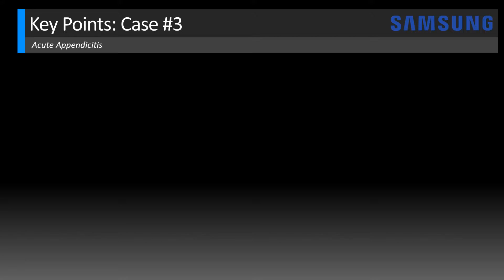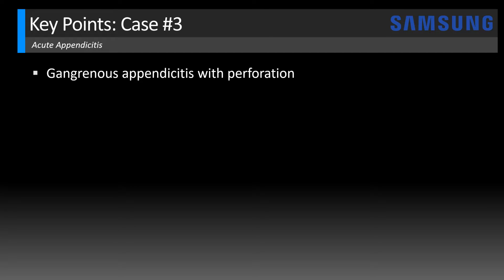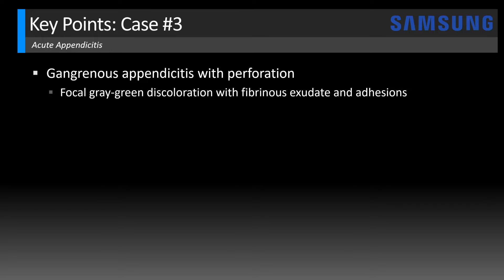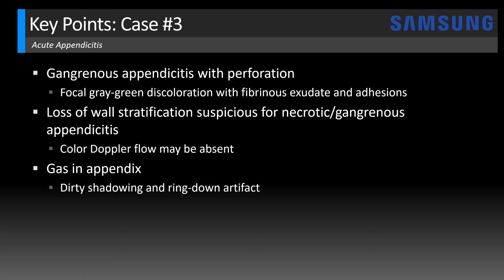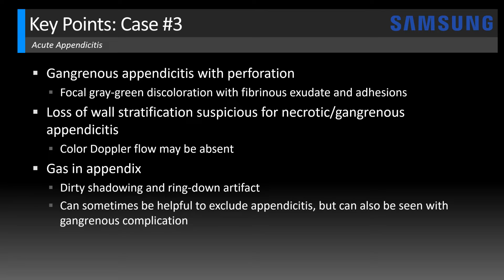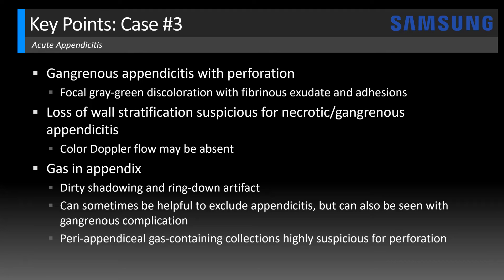Both the appendix and the collection appear thick-walled. At surgery, this was gangrenous appendicitis — not just perforation — with areas of focal gray-green discoloration and surrounding fibrinous exudate and adhesions. Loss of wall stratification raises suspicion for necrotic or gangrenous appendicitis on ultrasound. In gangrenous appendicitis, color Doppler flow may actually be lost. Gas in the appendix appears as dirty shadowing, sometimes with ring-down artifact; it can sometimes help exclude appendicitis since obstruction typically expels gas and causes fluid filling — but gas can also be seen with gangrenous complication or perforation. Peri-appendiceal gas-containing collections are highly suspicious for perforation, and complex cases may require CT for clarification.